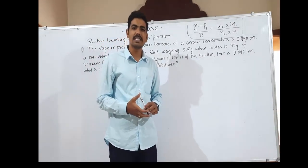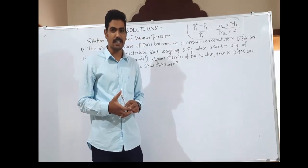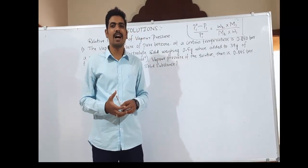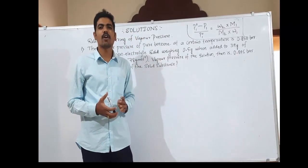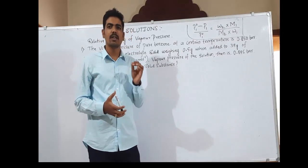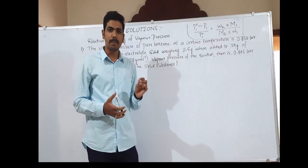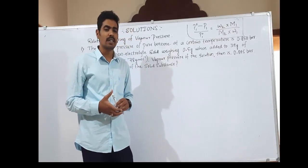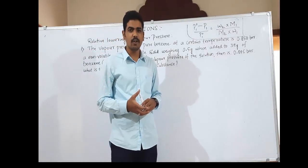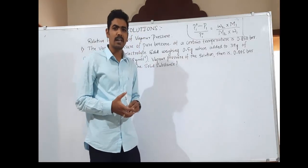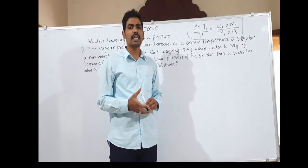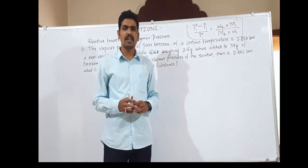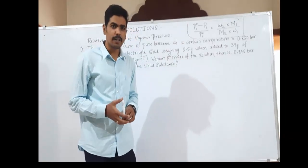Such properties are considered as colligative properties. Examples of colligative properties are relative lowering of vapour pressure, osmotic pressure, elevation in boiling point, and depression in freezing point. Those things we have discussed in the previous video, and we also studied relative lowering of vapour pressure in brief.